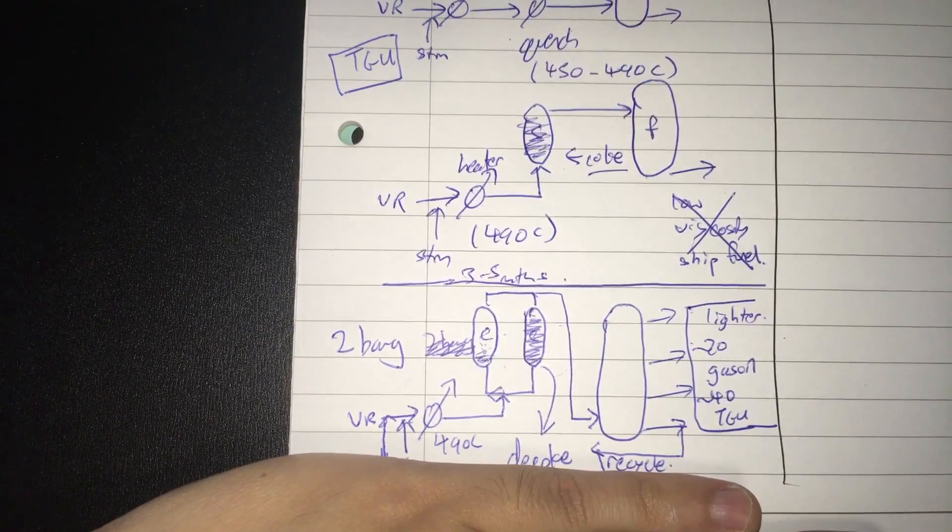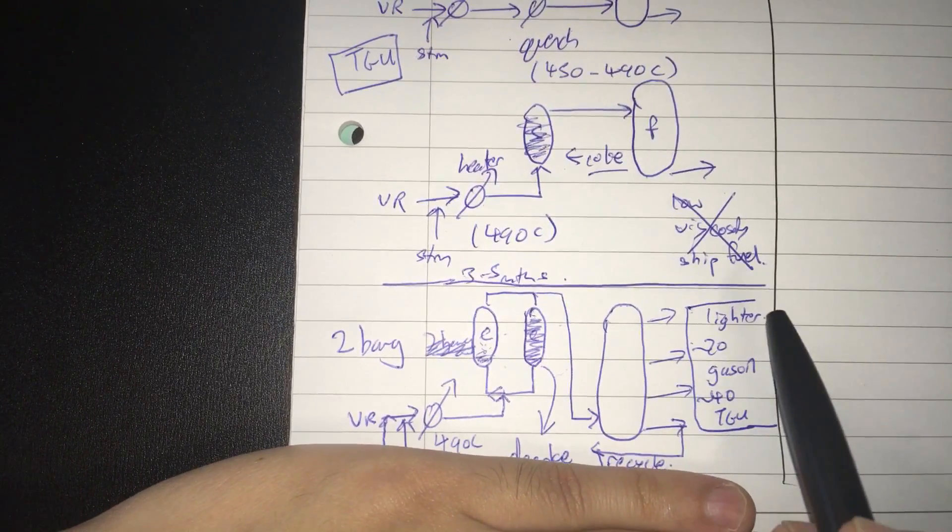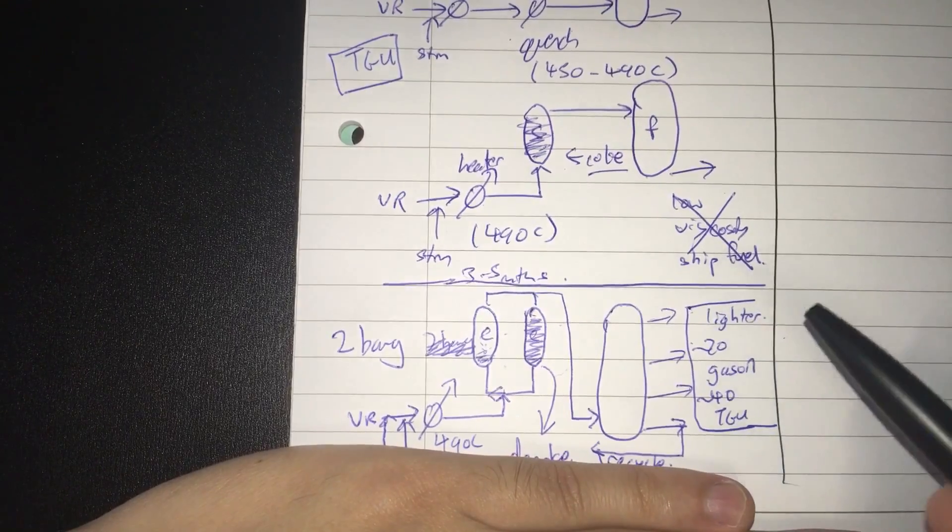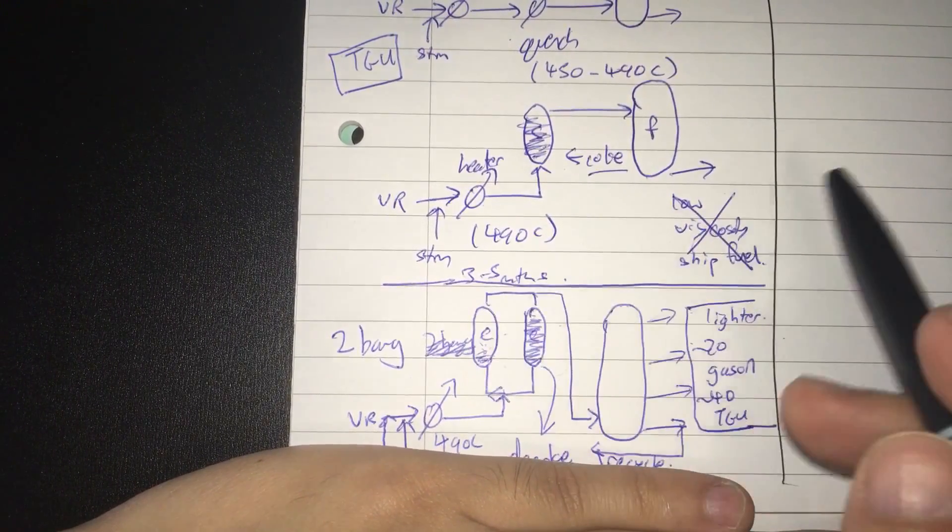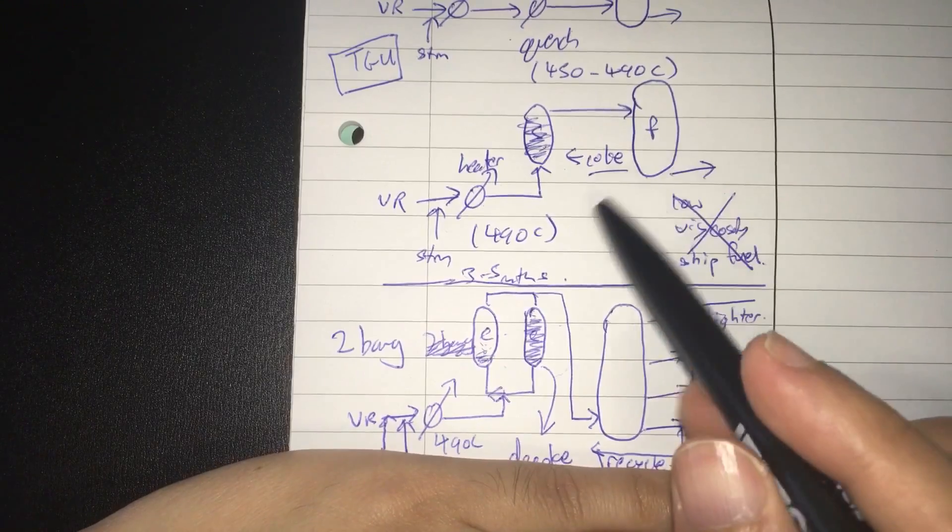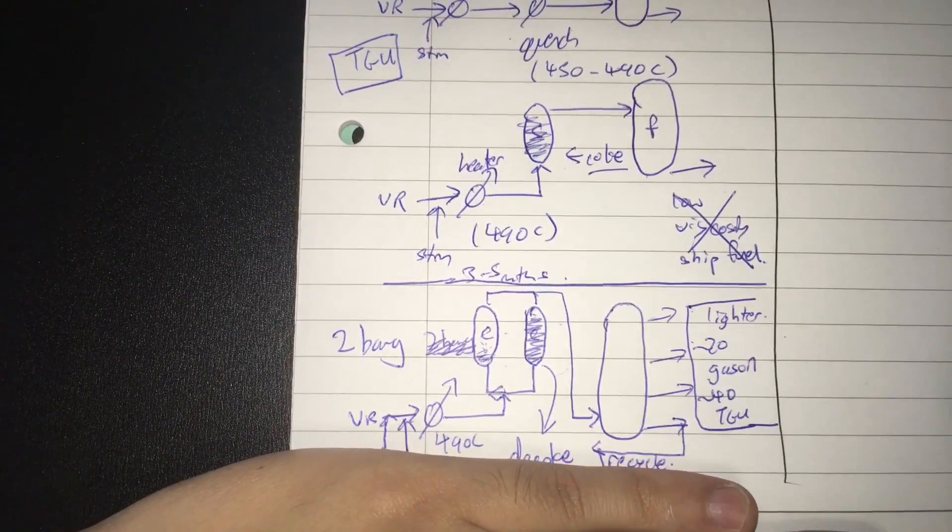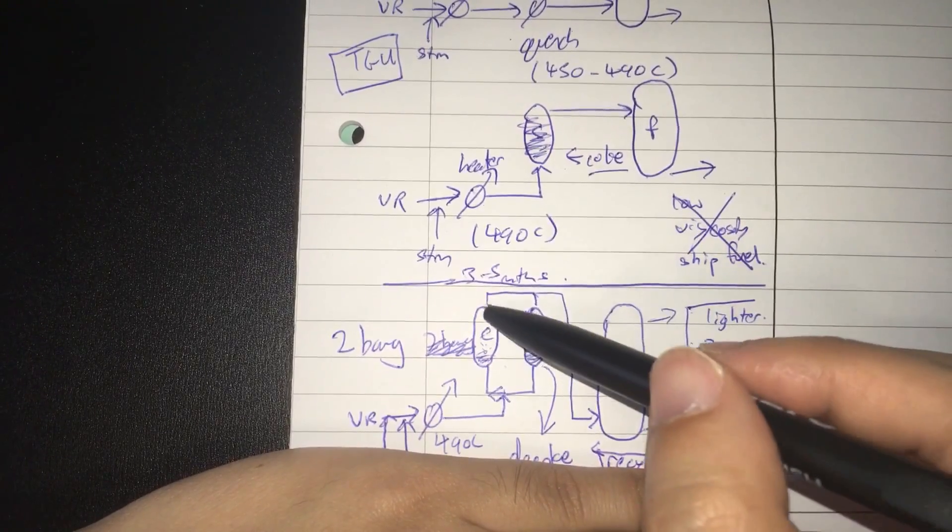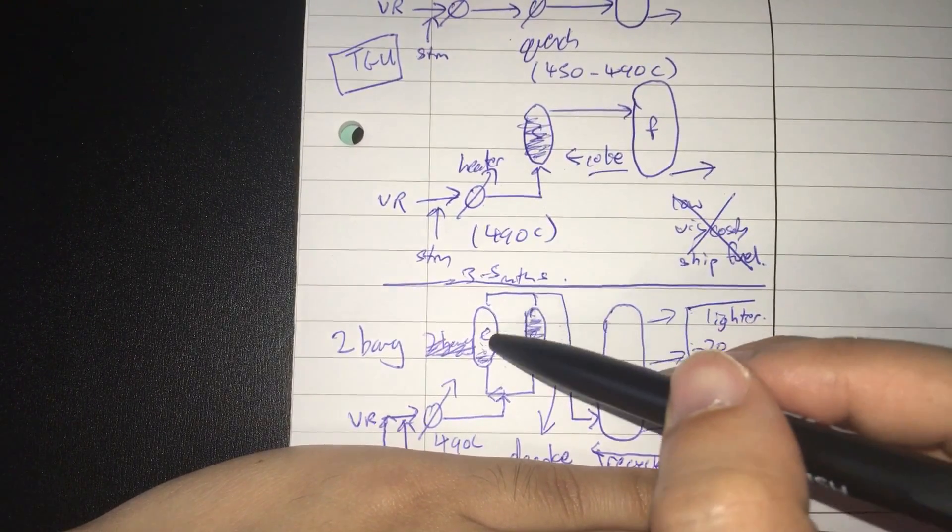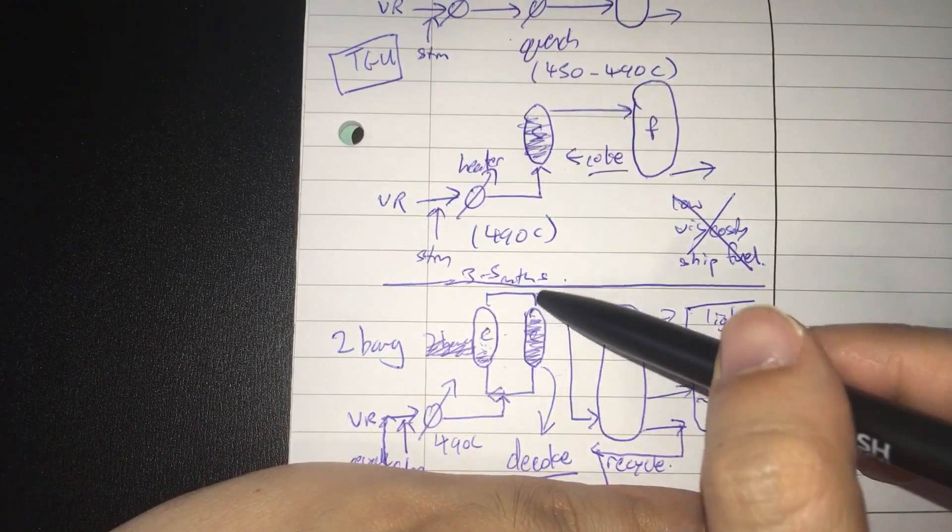But, don't be fooled by the name, don't be too intimidated. It's just like a soaker vis breaker process. Except the coking here is intentional, rather than an unwanted by-product. So okay, back to the explanation.